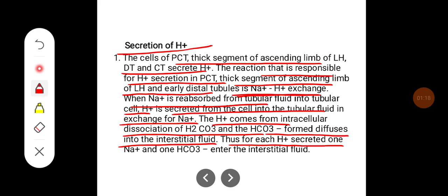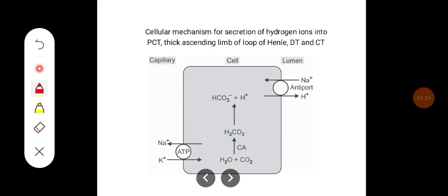Thus, for each H+ secreted, one sodium and one bicarbonate enter into the interstitial fluid. This cellular mechanism shows secretion of hydrogen ions into the PCT, thick ascending loop of Henle, distal tubule, and collecting duct, where the H+ ion is secreted with the antiport of one sodium.